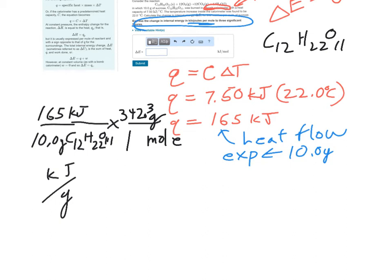So, now we've gotten rid of units of grams because we've placed them where they cancel out and we've got units of moles. So, 165 divided by 10 times 342.3 gives us 5,647.95 kilojoules per mole as our calculator lie.